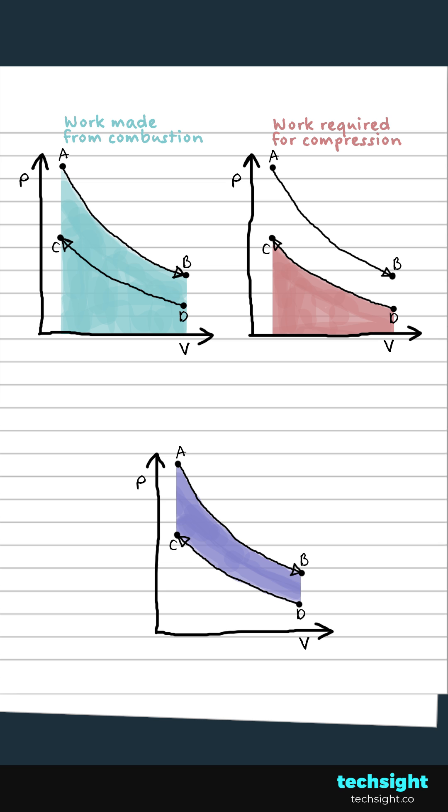Engine PV charts are more complex, so we need to use integral calculus to find the enclosed area. Subtracting the work required for compression from the work produced by combustion gives the net output of the engine cycle. Then dividing this area by the time taken for the cycle gives the engine power.